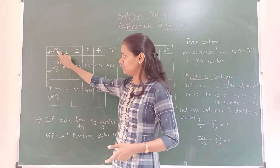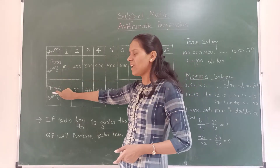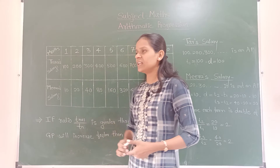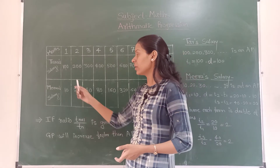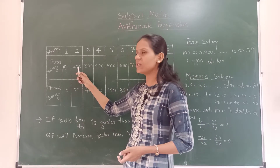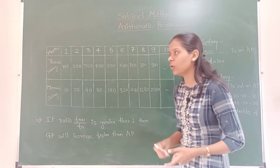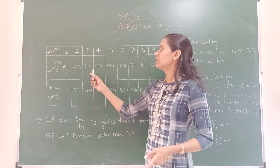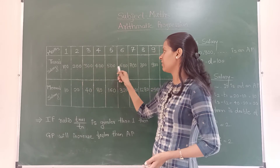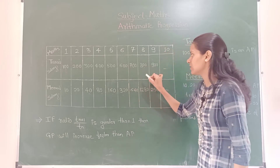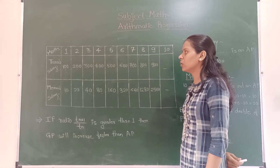Let me show you. Tara said: give me 100 gold coins in the first month and add 100 gold coins each month. So Tara's salary is: Month 1: 100, Month 2: 200, Month 3: 300, Month 4: 400, Month 5: 500, Month 6: 600, Month 7: 700, Month 8: 800, and Month 9: 900 gold coins.